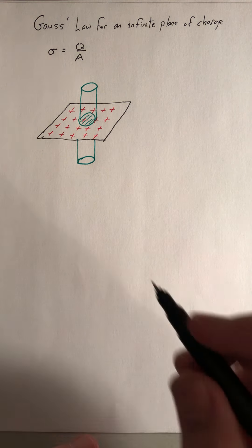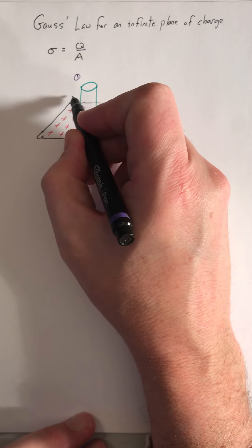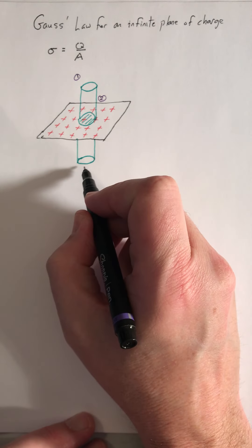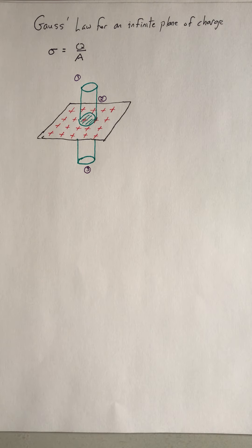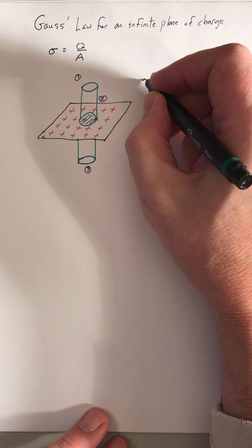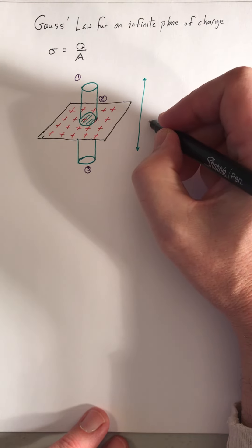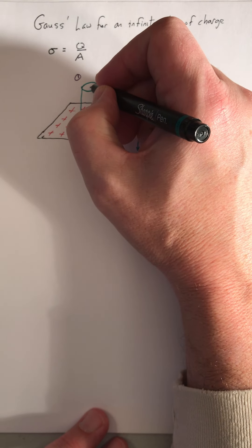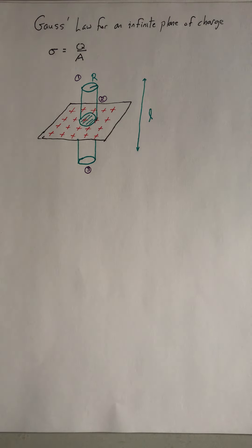So our closed surface is going to be made out of one end cap, the wall of the cylinder, and then the third surface is the other end cap on the opposite side. And we'll specify that this mathematical surface we're going to apply Gauss's law to is going to have a length L and the circular end caps have a radius R.